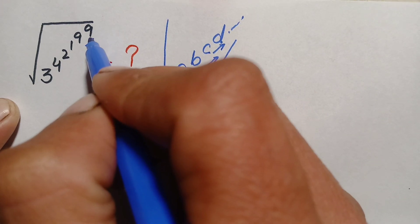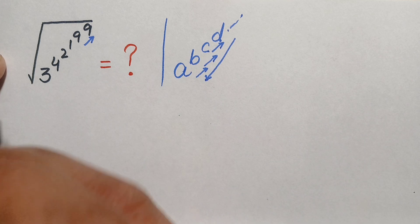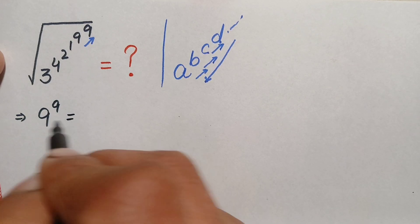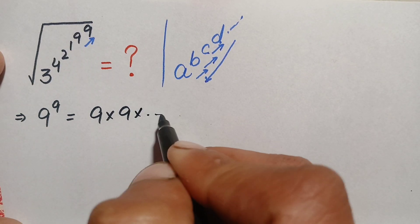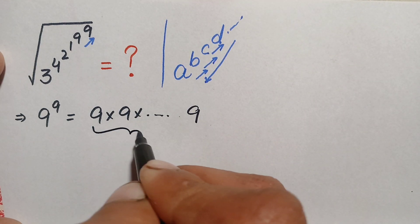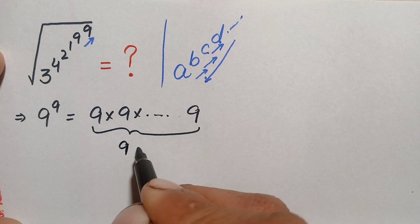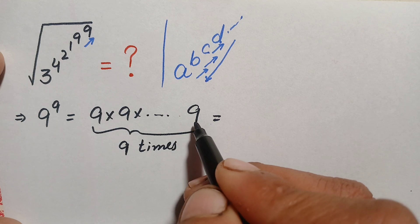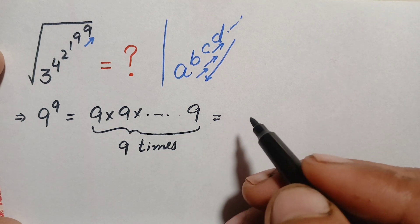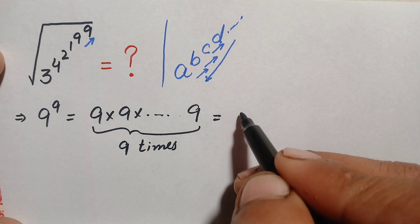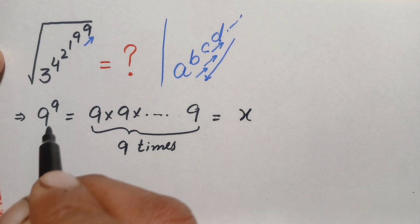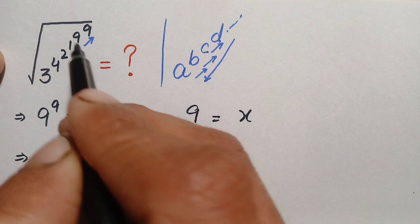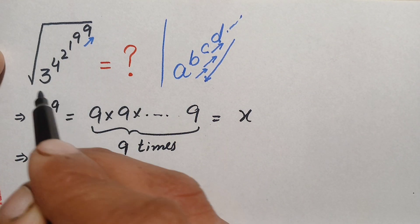According to this rule, we will first solve 9 raised to the power 9. This means we multiply 9 by itself 9 times. Multiplying 9 nine times gives a very large number, perhaps in the thousands or millions, so let's call this bigger number x. Therefore the value of 9 raised to the power 9 is x, and we replace that power with x.